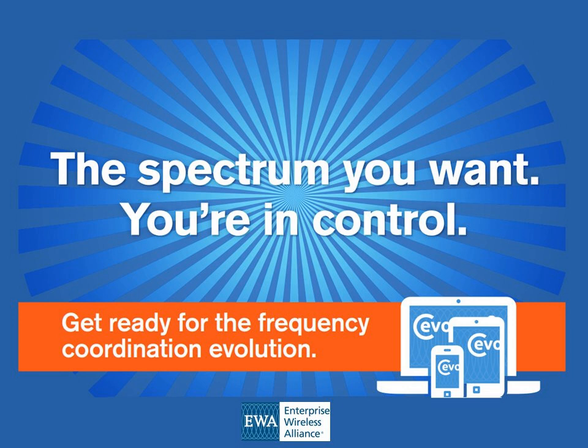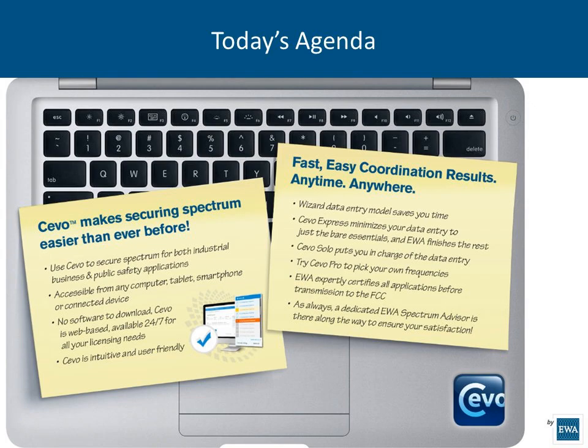SEVO has been set up so that you can submit both applications for public safety and for business industrial through one single portal, which you can access from any computer, any smartphone, any tablet, any time, any day. There is no software to download, and the website is the same as EWA's — EnterpriseWireless.org — for all of your licensing needs.